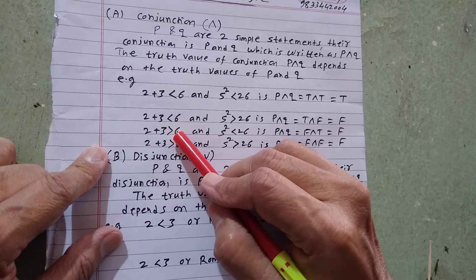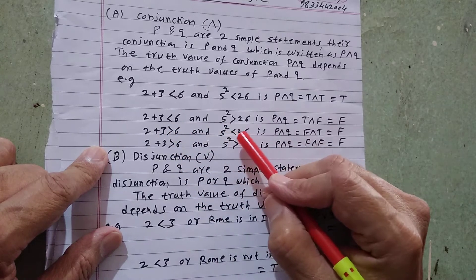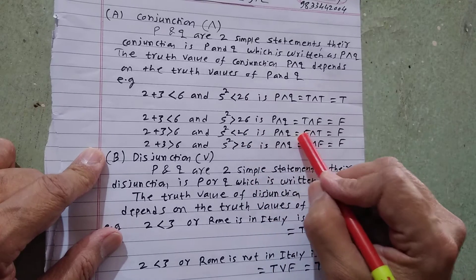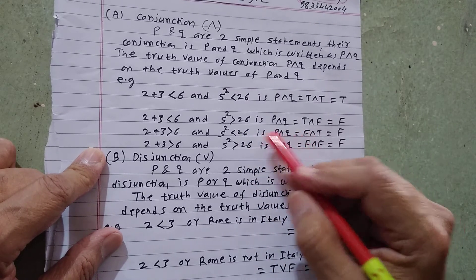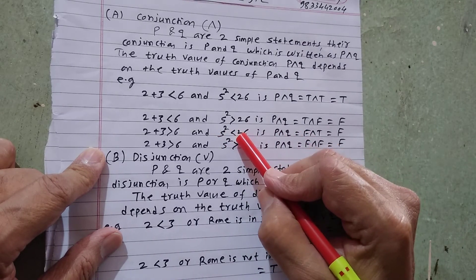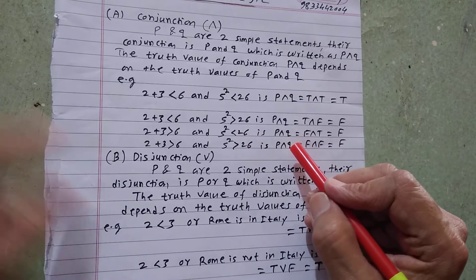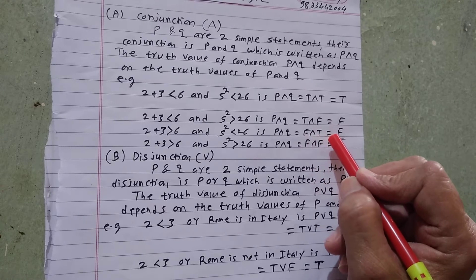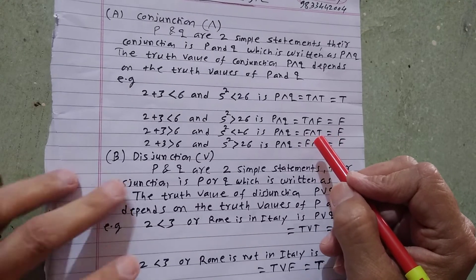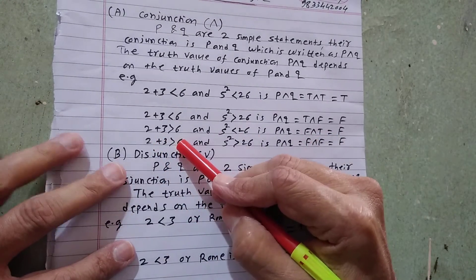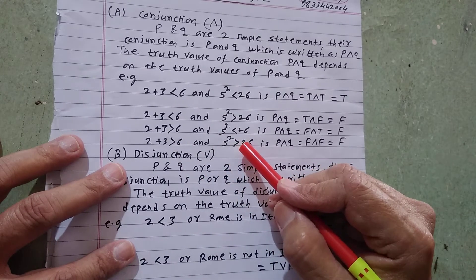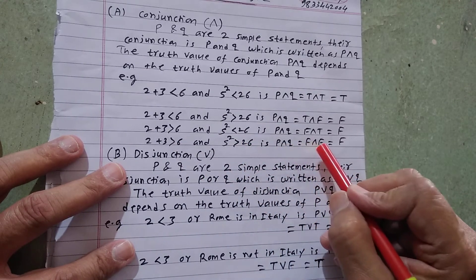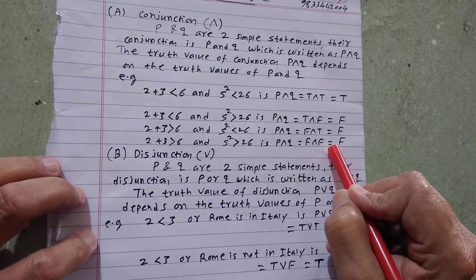Next: '2 plus 3 greater than 6' AND '5 squared less than 26'. Here '2 plus 3 greater than 6' is false and the second part is true. Therefore false AND true equals false. And finally '2 plus 3 greater than 6' AND '5 squared greater than 26' gives false AND false, which is also false.